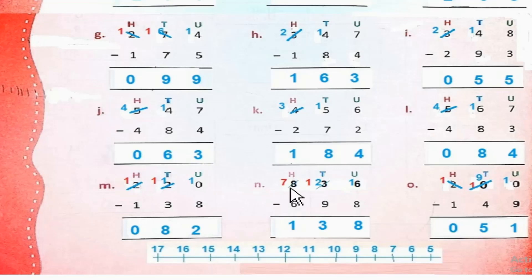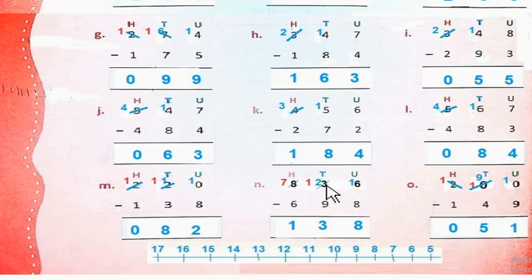Part N: 836 minus 698. 6 से 8 minus नहीं होता। So हम 3 से 1 borrow करेंगे — यह 2 रह जाएगा, और यह 16 हो जाएगा। 16 minus 8 = 8. अब 2 से 9 minus नहीं होता, so हम 8 से 1 borrow करेंगे — यह 7 रह जाएगा, and this is 12 tens. 12 tens minus 9 = 3. 7 minus 6 = 1. So the answer is 138.